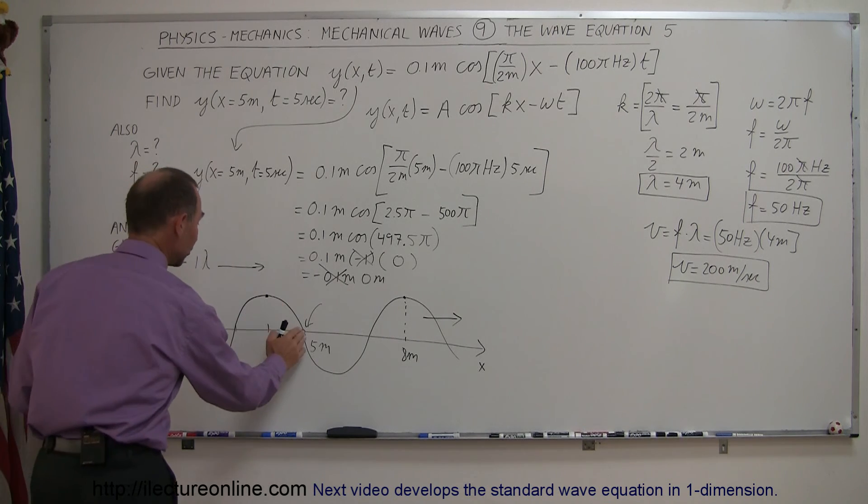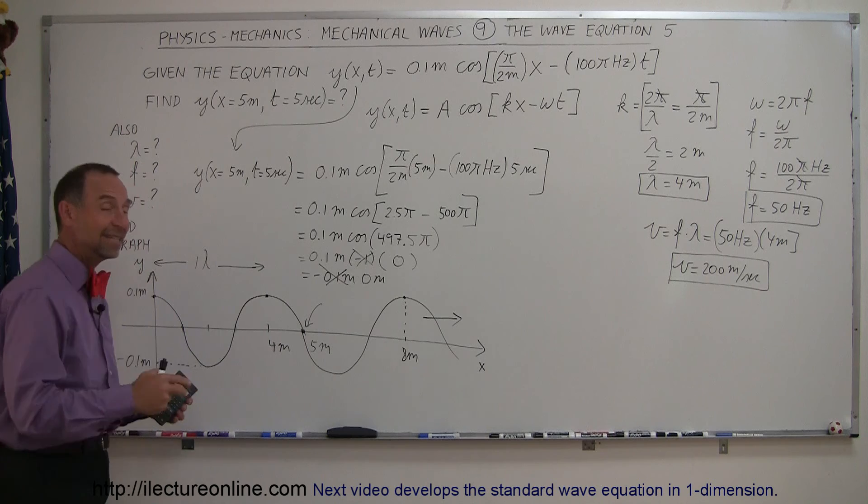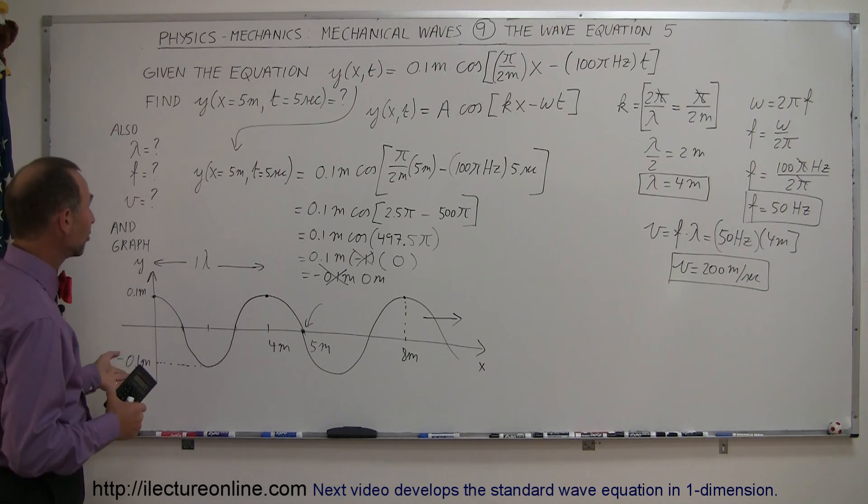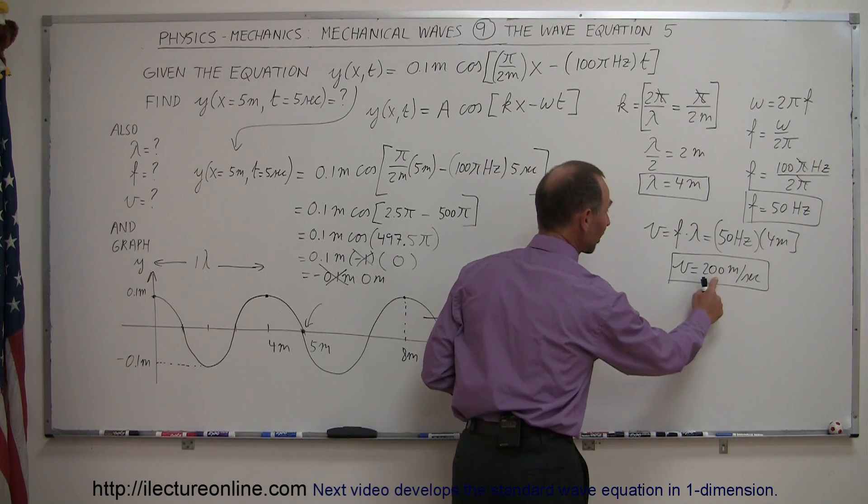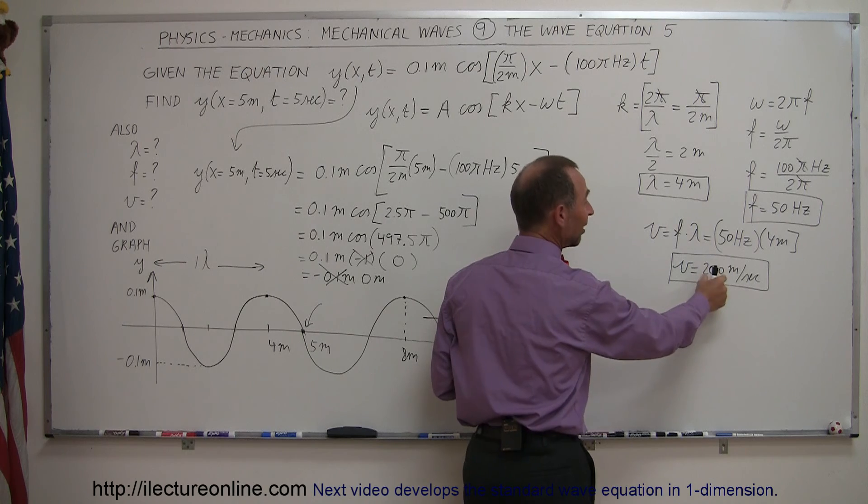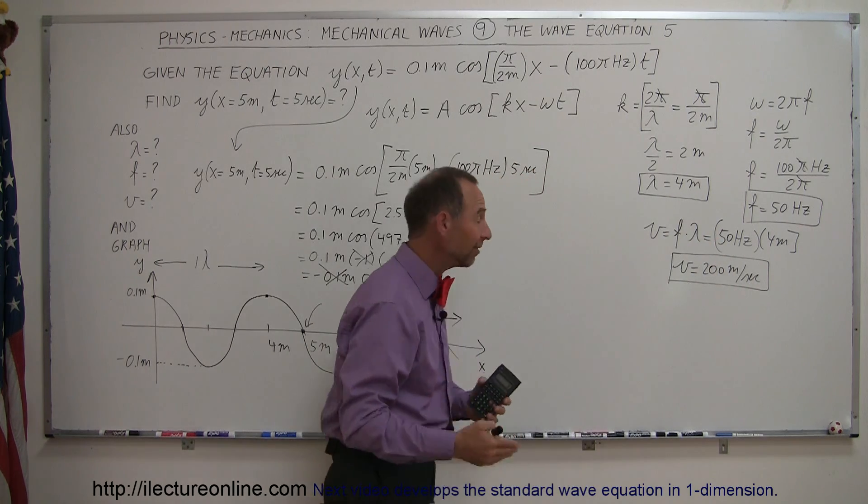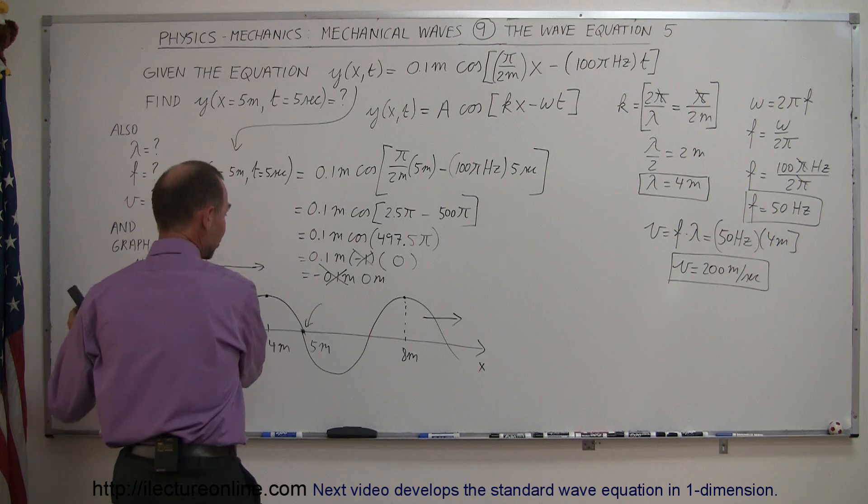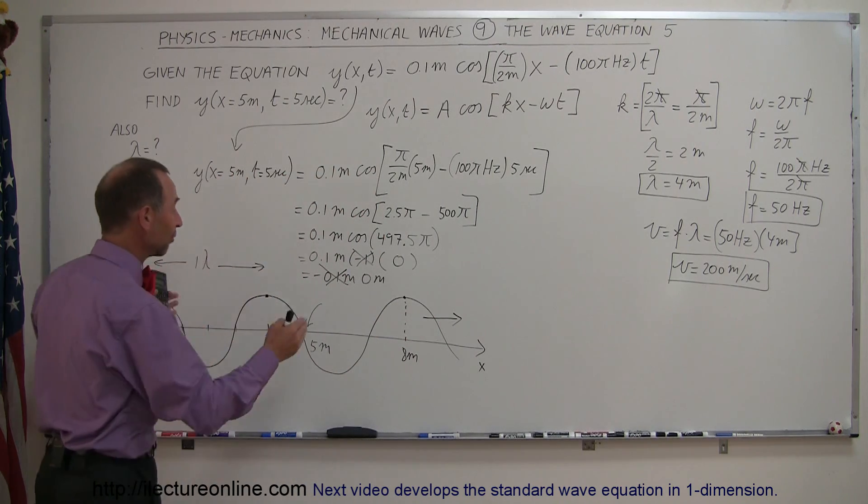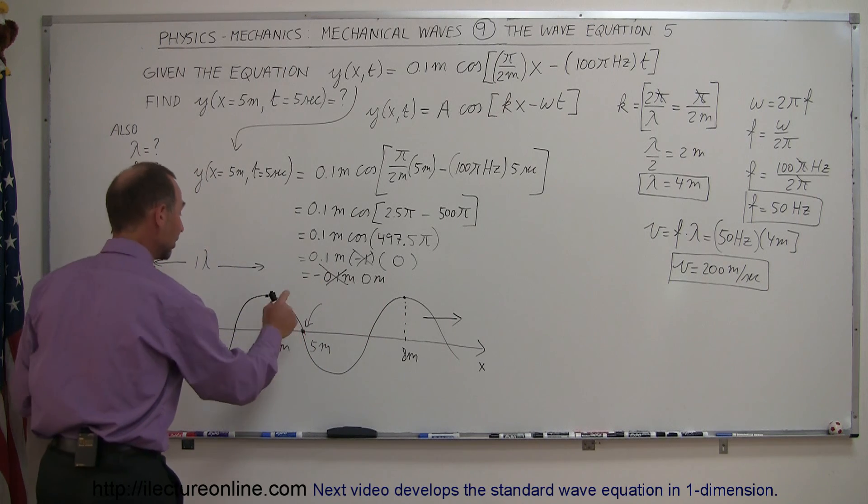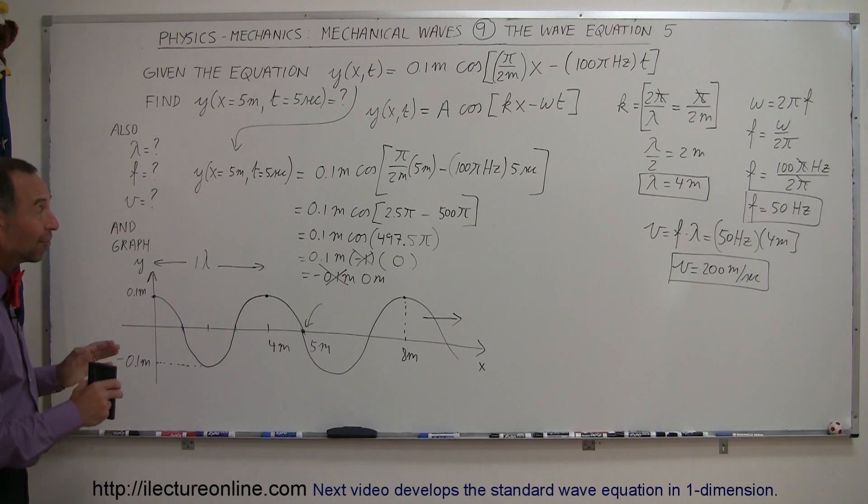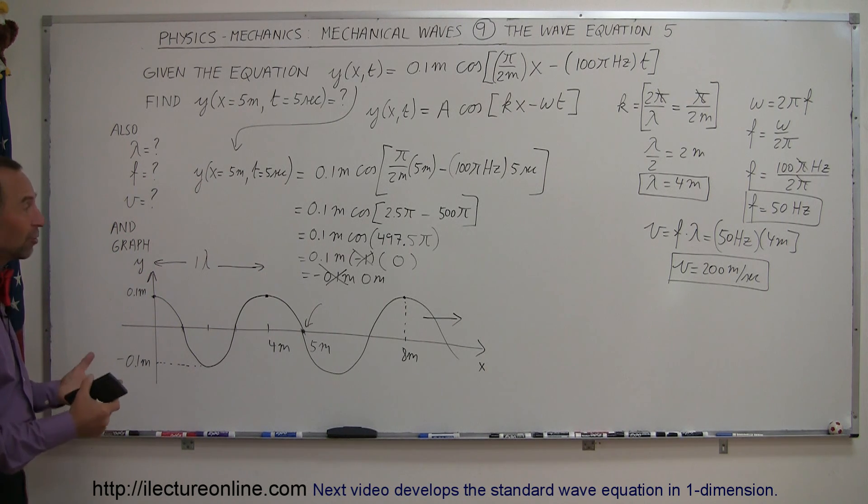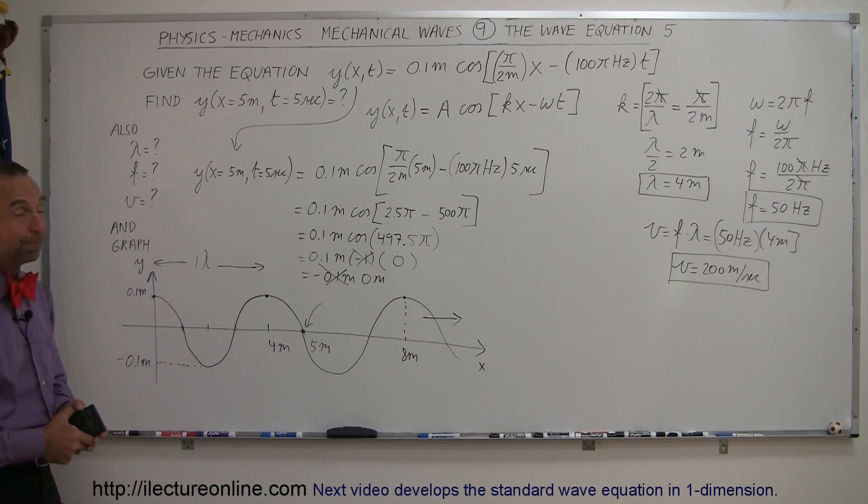This is the displacement at 5 meters at t equals 0, but it's also displacement at 5 meters at t equals 5 seconds. After 5 seconds moving at 200 meters per second with a wavelength of 4 meters, that means 50 wavelengths per second, so after 5 seconds the wave has moved 250 wavelengths. The wave field would look exactly the same as it did now, 5 seconds later, with displacement equal to 0 at x equals 5 meters. Hopefully that gives you a much better understanding of how a wave equation works and how to read and interpret the various portions of the wave equation.